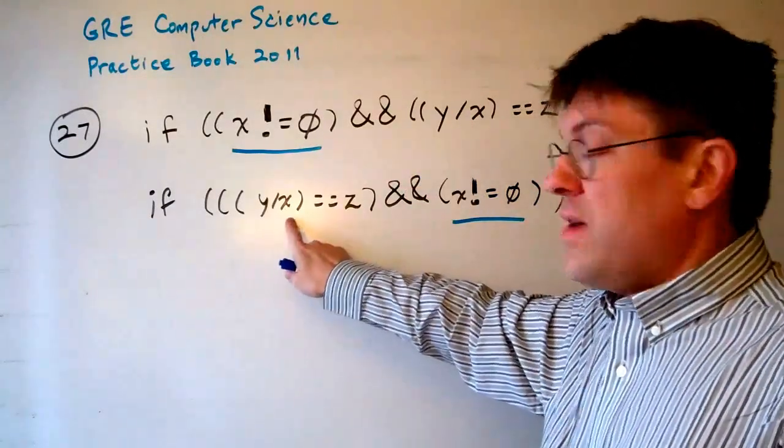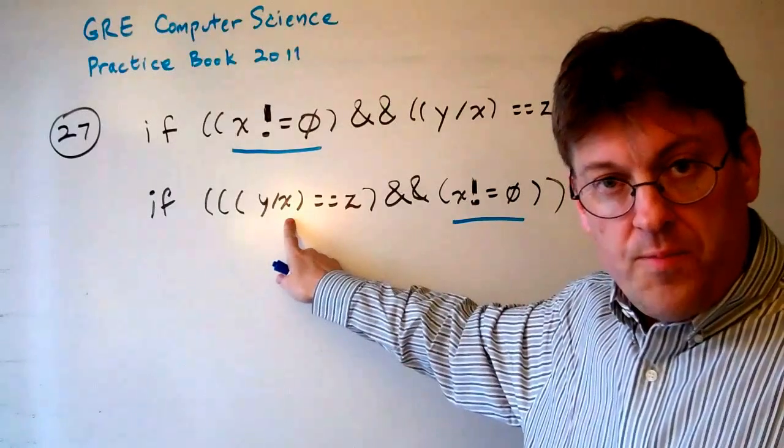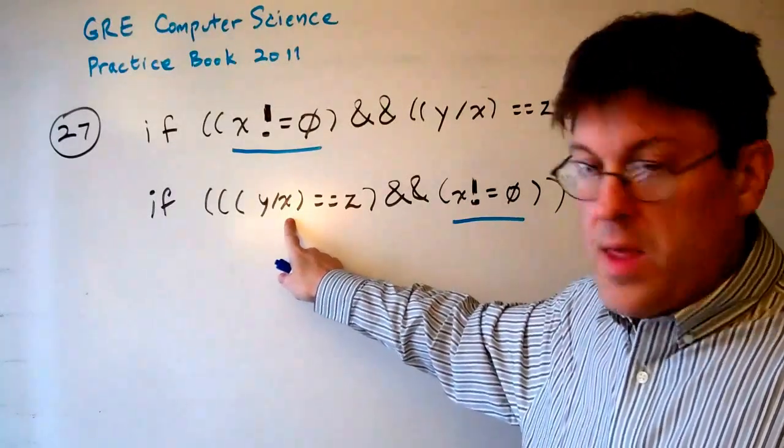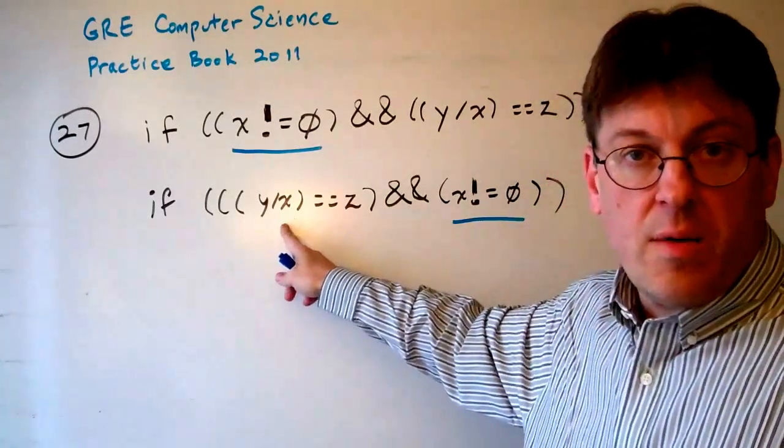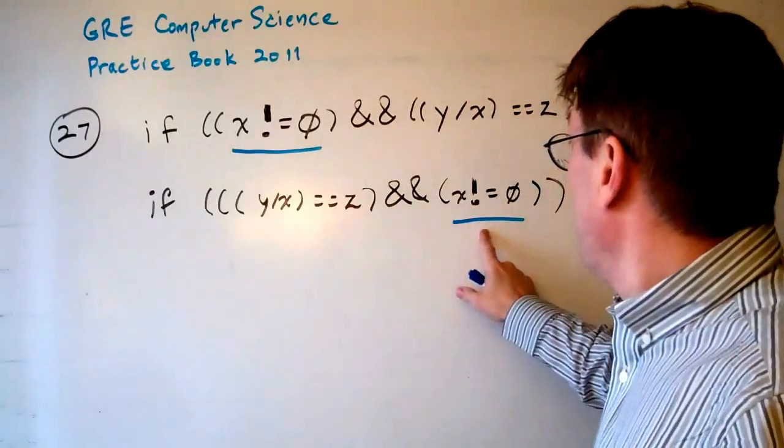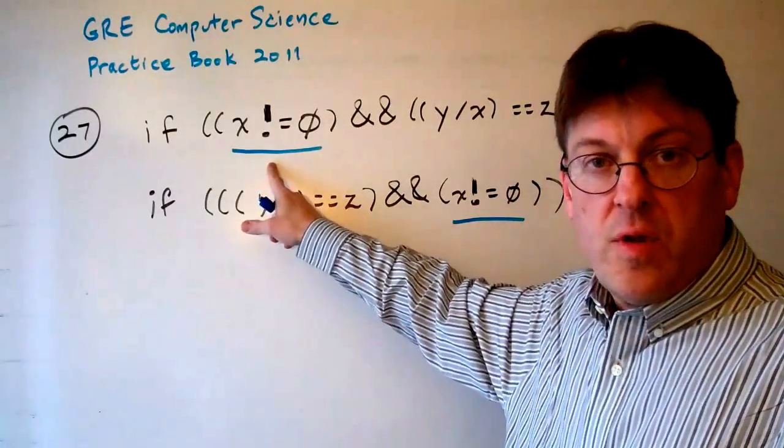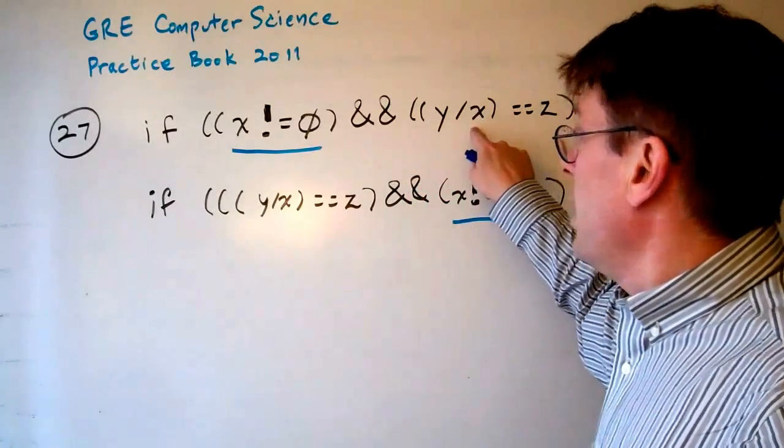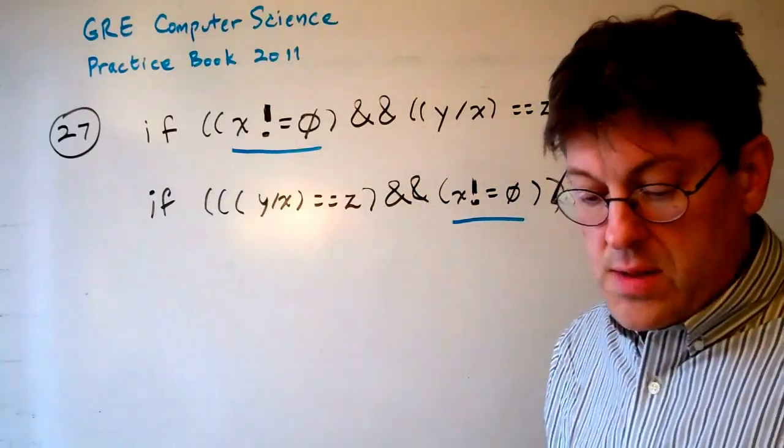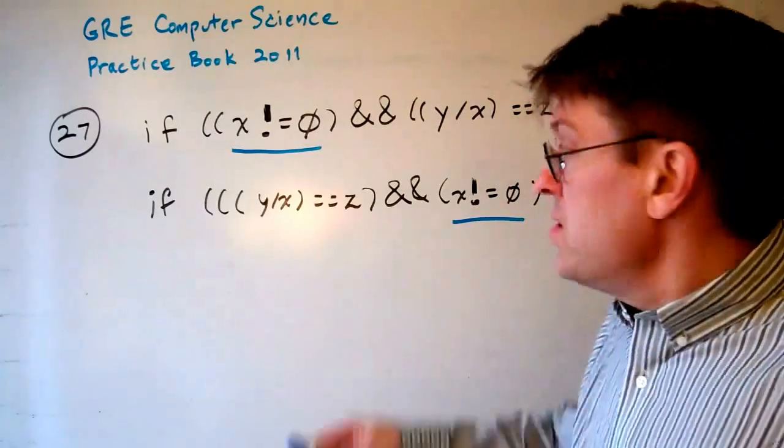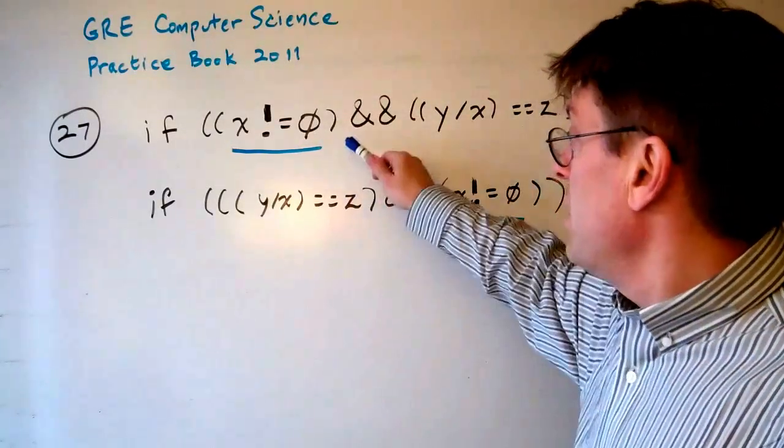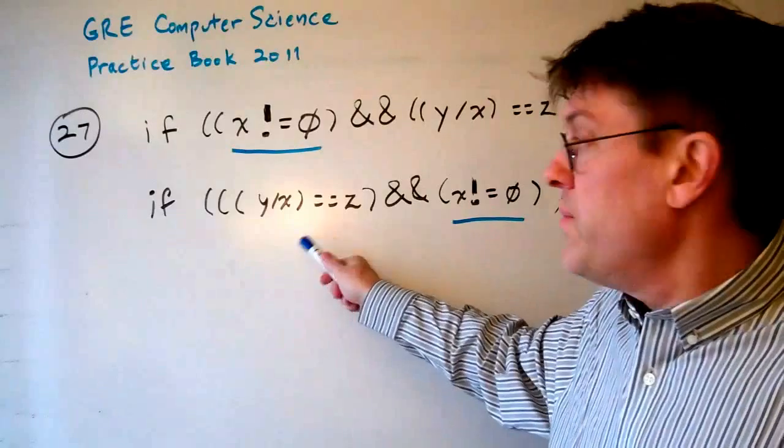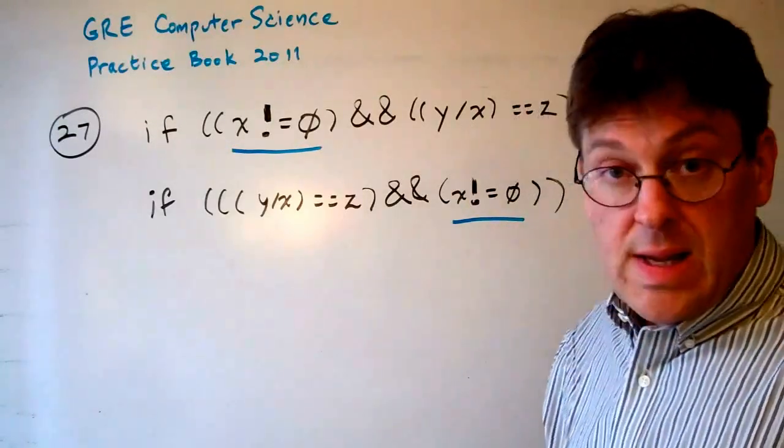So the problem is, if x equals zero, then you'll get a divide by zero error. And so you have to do this first. In other words, for all y and z, if x equals zero, that's the x that they're talking about, these two lines will behave differently. This one will work and this one will not. So the answer is D.